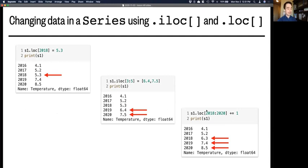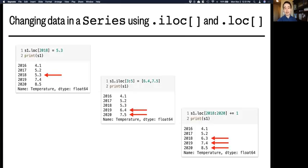And in this third example here, dot loc brackets 2018 to 2020, inclusive at the end, plus equals 1. That adds 1 to the data in 2018, 2019, and 2020. Again indexing by label is inclusive at the end.